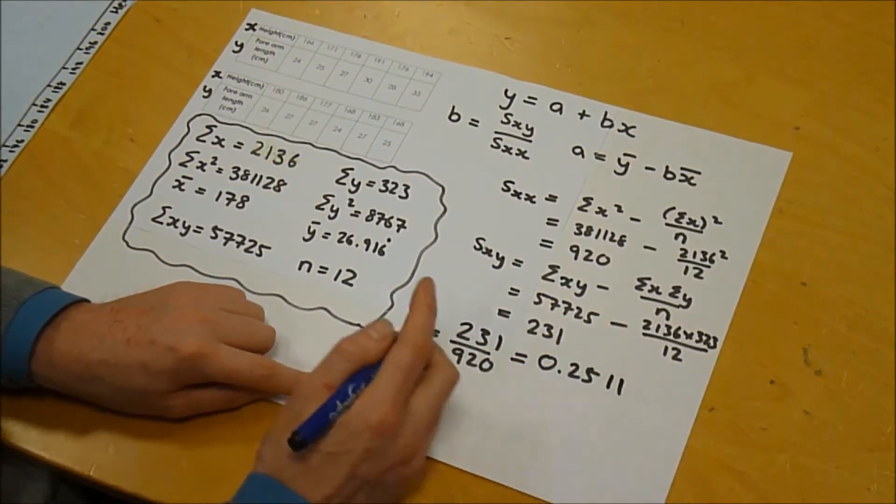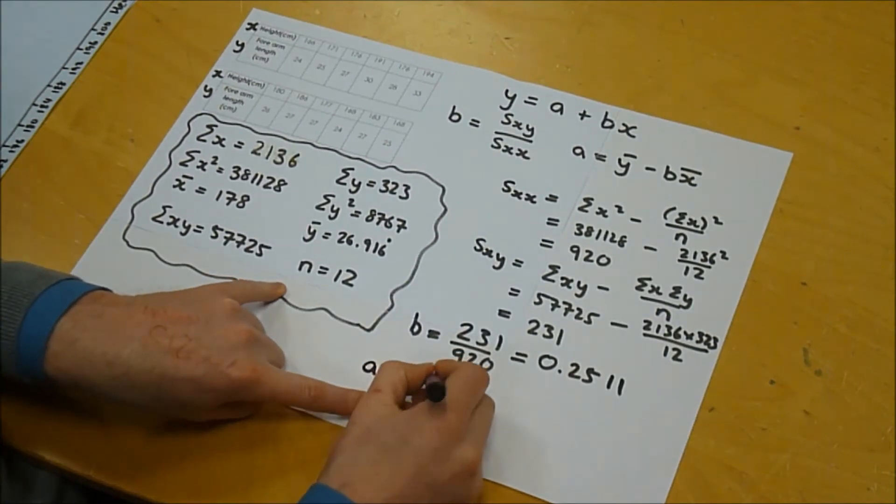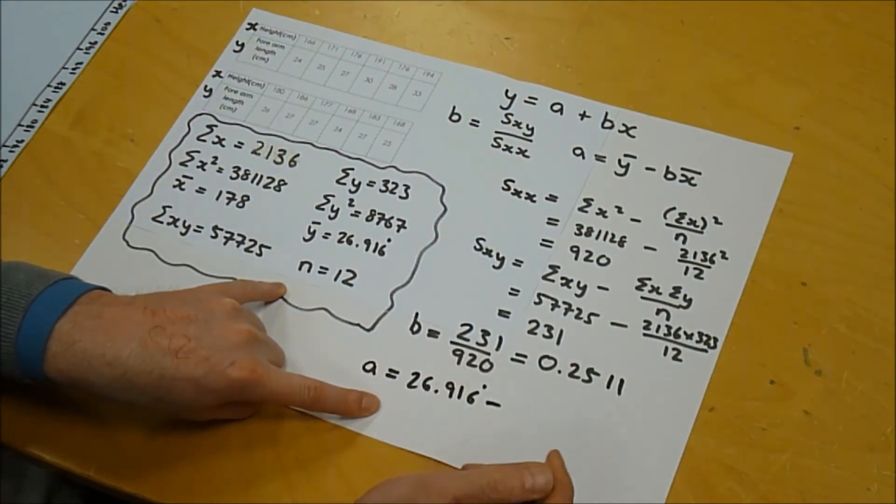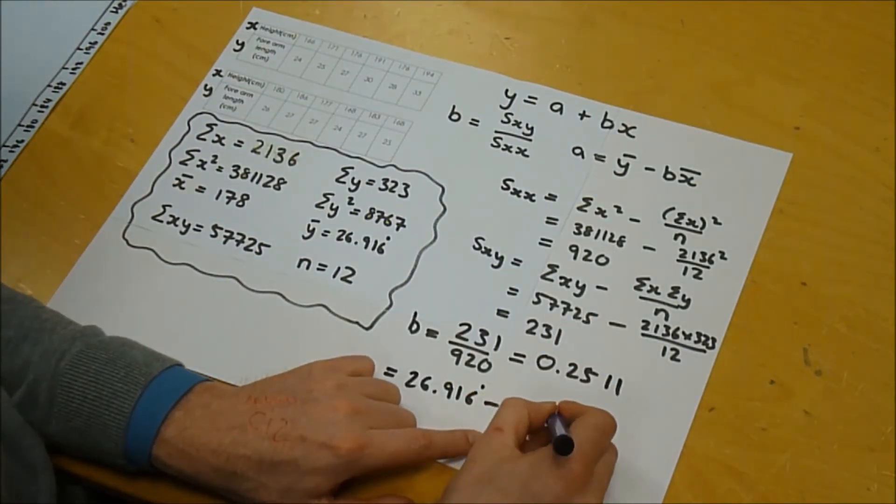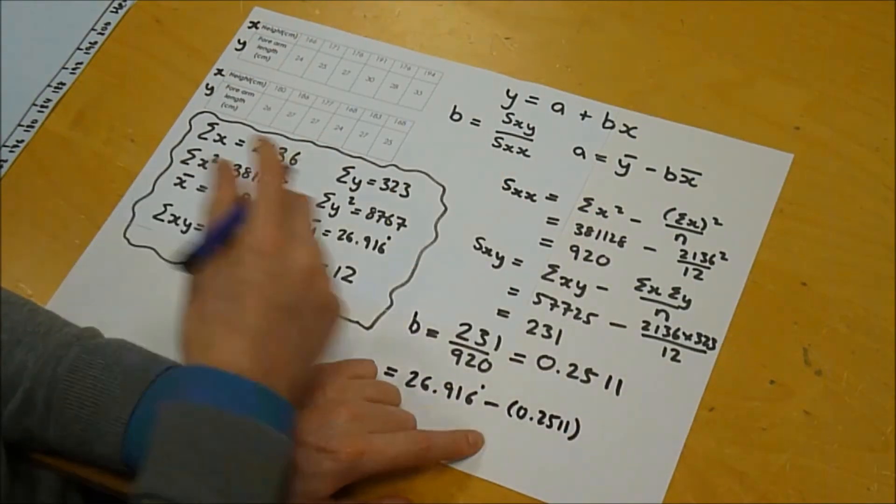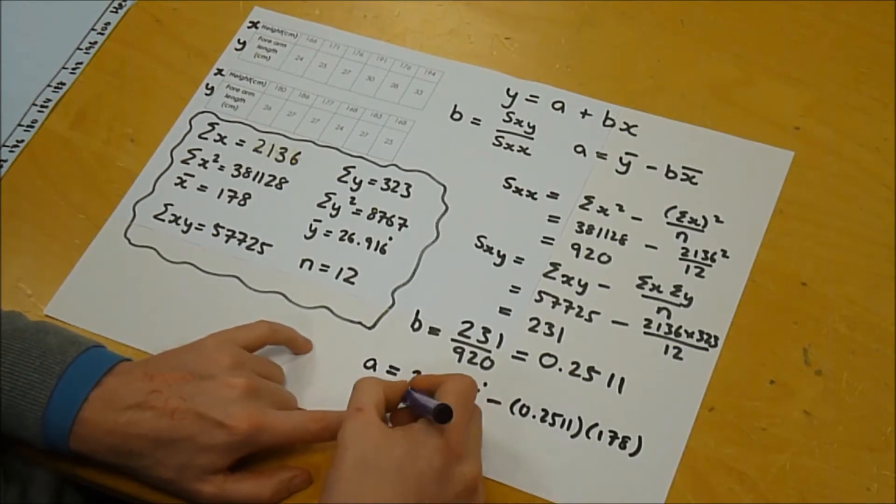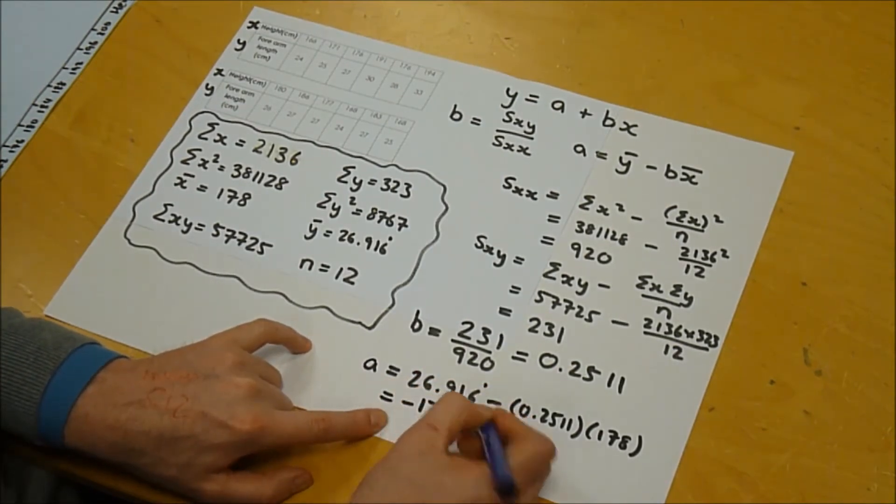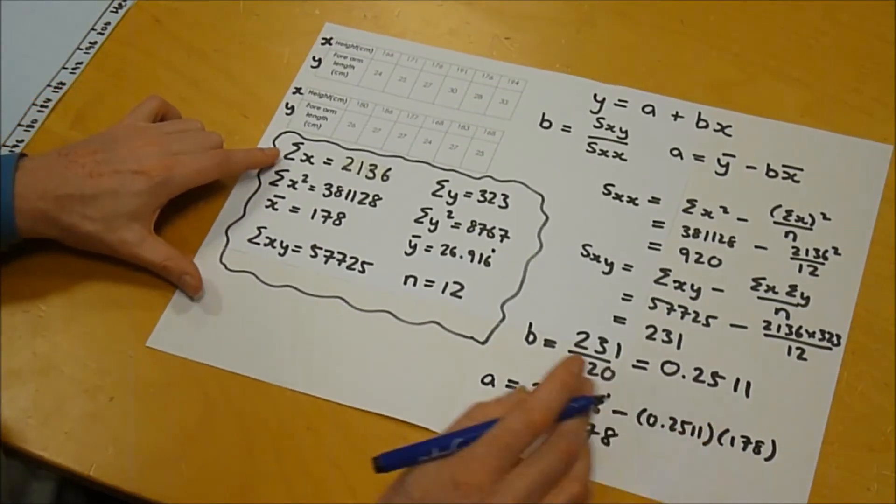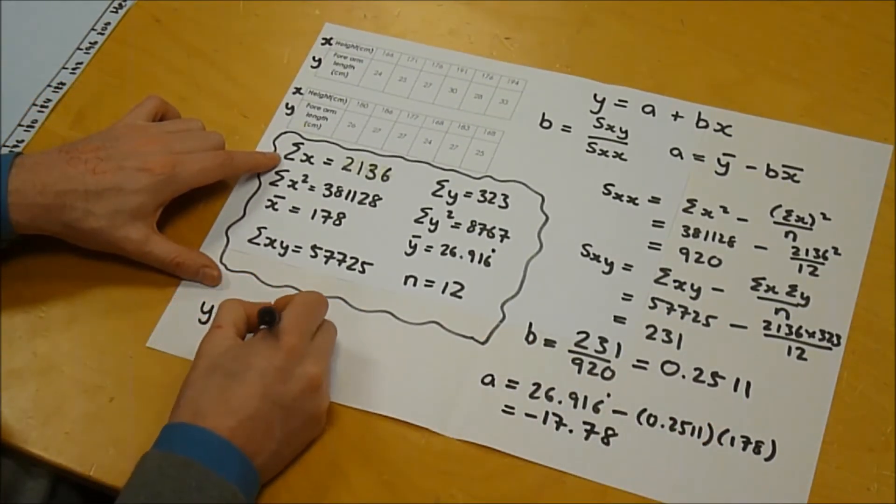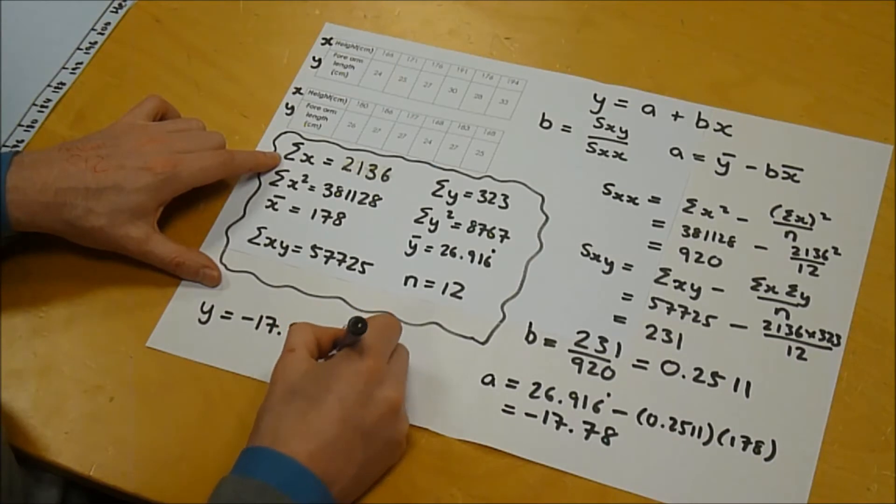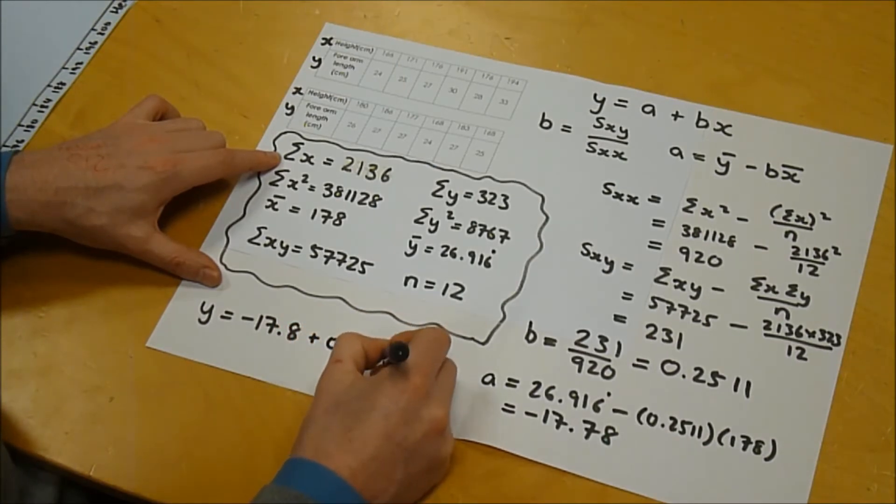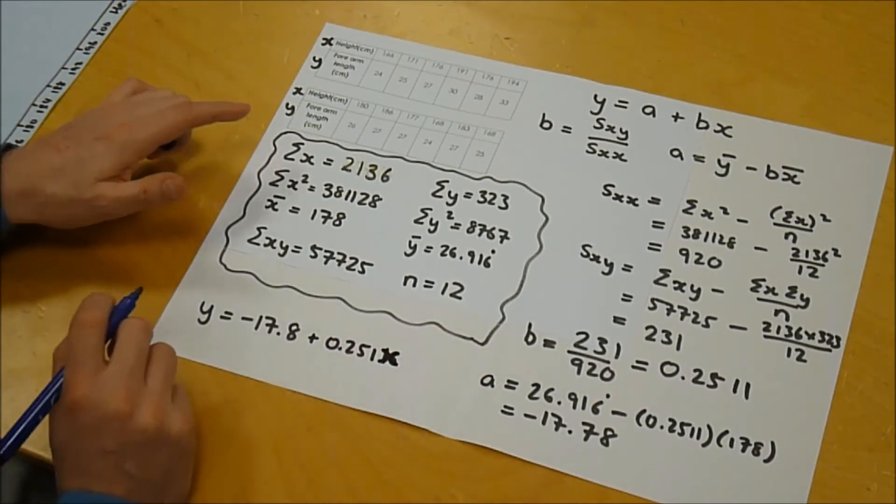So now we can work out a. Well, a is equal to y bar, which is 26.916 recurring, minus b, which we've just worked out, so that's 0.2511 times x bar, which is 178. And so when you plug that in, you get minus 17.78. So overall our regression line is y equals minus 17.8, let's do it to three significant figures, plus 0.251x.